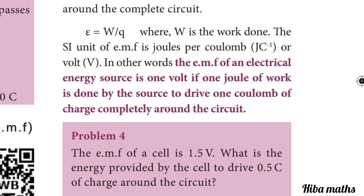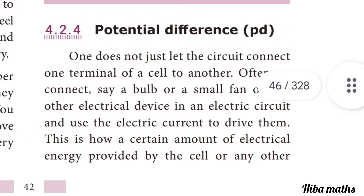In other words, the EMF of an electrical energy source is 1 Volt if 1 Joule of work is done by the source to drive 1 Coulomb of charge completely around the circuit. So 1 EMF value equals 1 Joule of work done for driving 1 Coulomb of charge around the complete circuit.